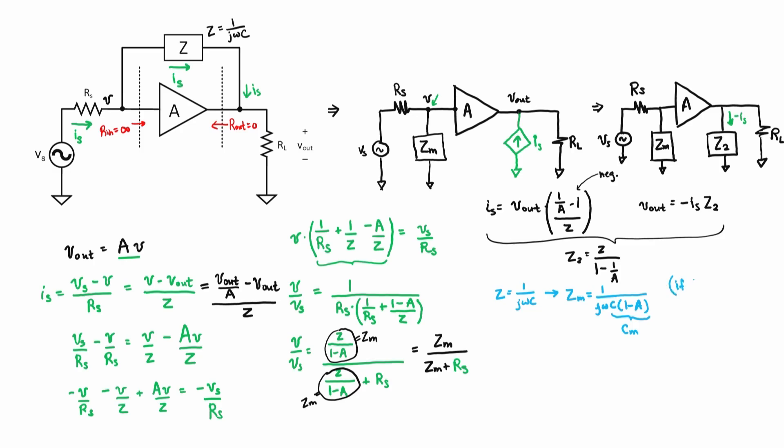So you see what happens? If the gain of your amplifier a is large and it's negative, then it means that the capacitor is going to appear to the circuit to be a much larger capacitor. The larger your gain, the worse the situation becomes.